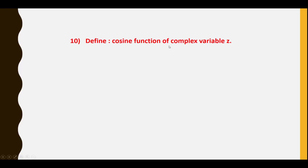Tenth question: Define the cosine function of complex variable Z. cos Z = (e^(iZ) + e^(−iZ)) / 2.